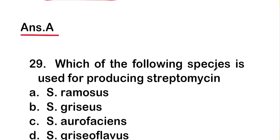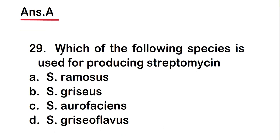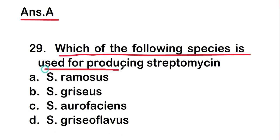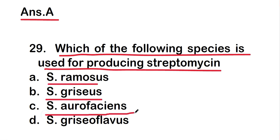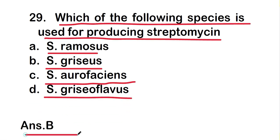Next question: which of the following species is used for producing streptomycin? Options are S. ramosus, S. griseus, S. orofaciens, or S. griseus flowers. The right answer is option B — S. griseus is the species used for producing streptomycin.